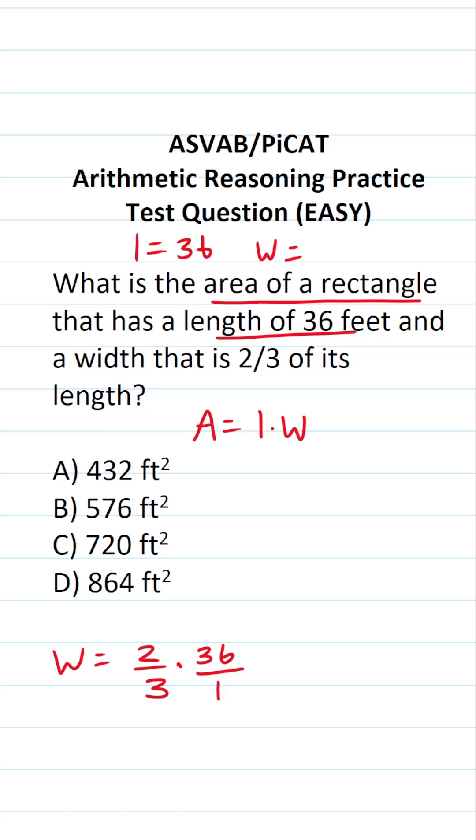36 divided by one is just 36. Now when you multiply fractions, you just multiply straight across. That said, with fractions, you always want to cross-reduce whenever possible. In this case, I can say three goes into three one time, three goes into 36 twelve times. And by doing that, this becomes two over one.